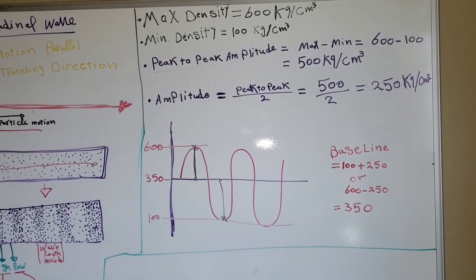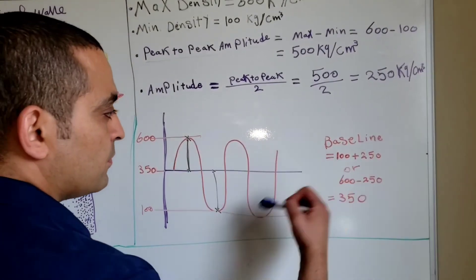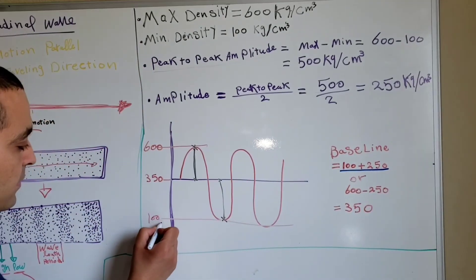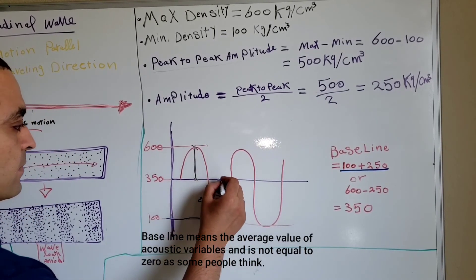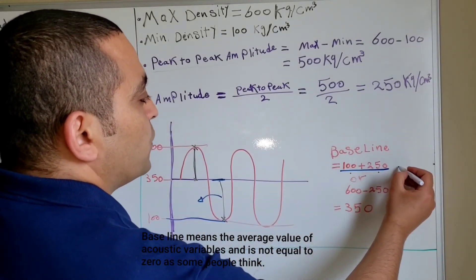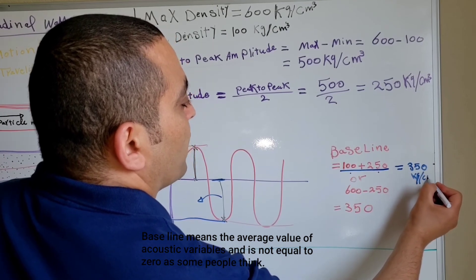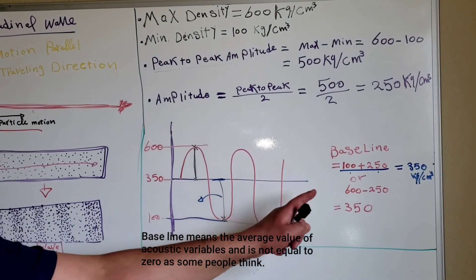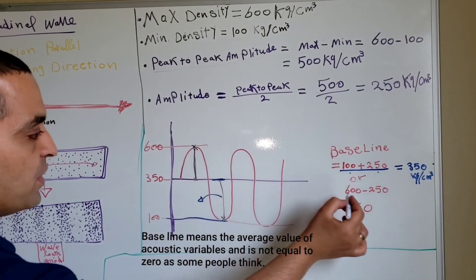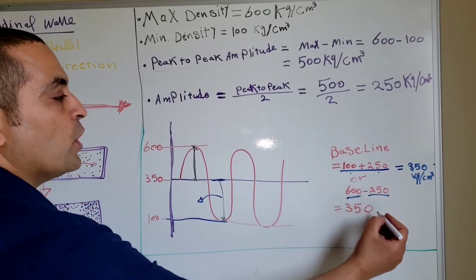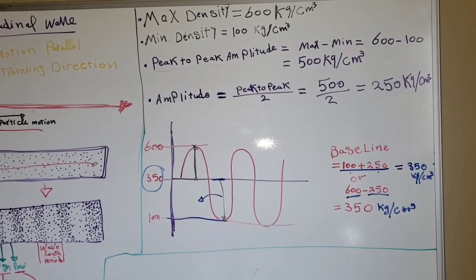To find the baseline, we can calculate it as the minimum plus the amplitude: 100 plus 250 equals 350 kg per cubic centimeter. Or alternatively, the maximum minus the amplitude: 600 minus 250 also equals 350 kg per cubic centimeter. So the baseline is 350 kg per cubic centimeter. This is how we calculate the amplitude from the acoustic variables.